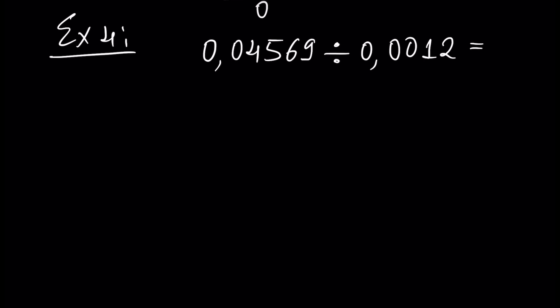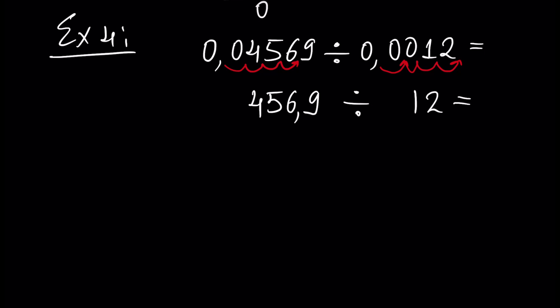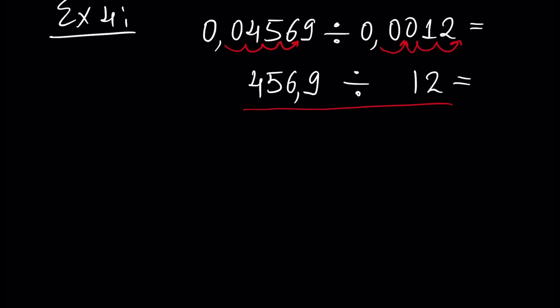We just shift our decimal points. Here we can shift our decimal point 4 times: 1, 2, 3, 4 — and we have 12. Here we also shift the decimal point 4 times: 1, 2, 3, 4 — and we have 456.9. The result of division of these two is the same, and next we solve 456.9 divided by 12, which is again division by an integer number.